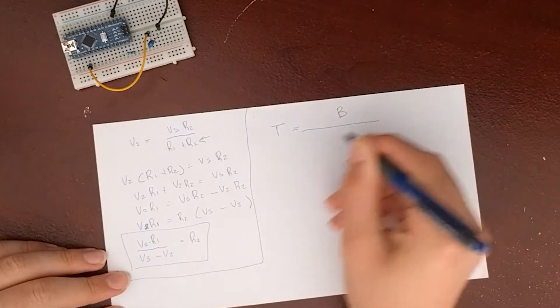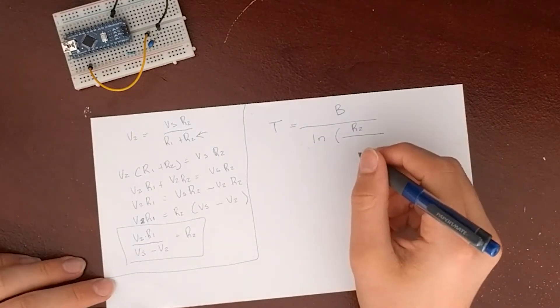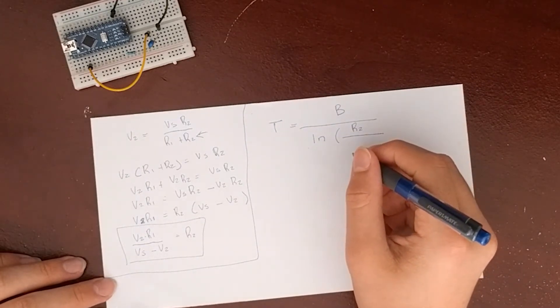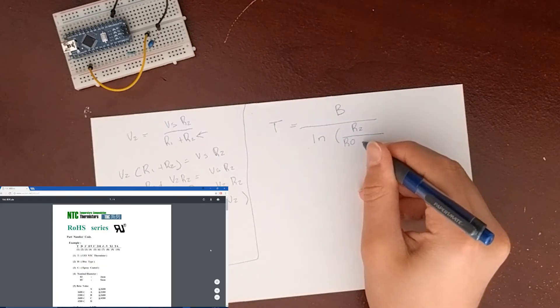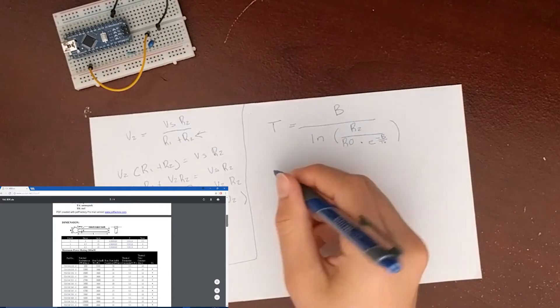To get the temperature, I decided to use the following equation. I chose this formula because looking at my data sheet for this thermistor, I couldn't find anything to give me the temperature. However, I managed to find the values for B, R0, and T0 in my data sheet.